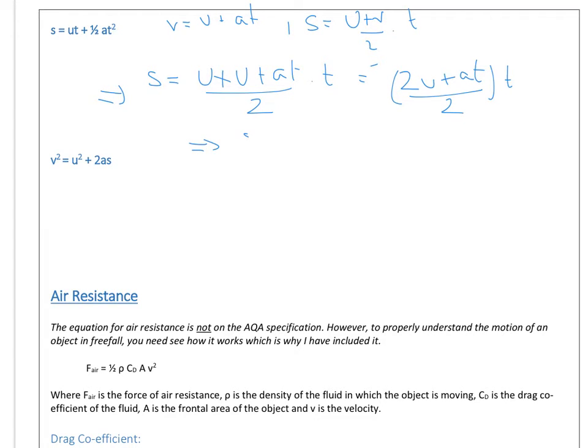So we can clean that up even more. Now, S is going to be UT, because on the left-hand side, the 2 is going to cancel. But on the other side, you end up with half AT squared. And we've got this equation right here.